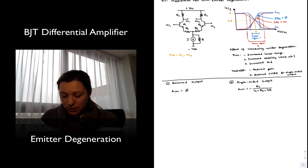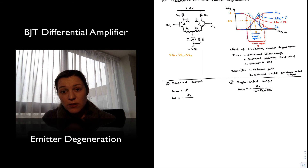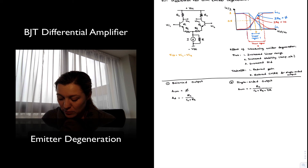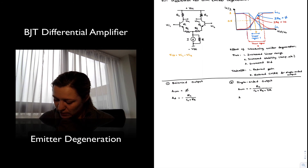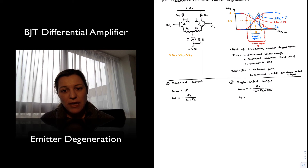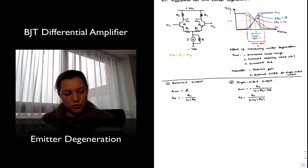The differential gain for the balanced output was equal to negative RC divided by little rE. Now with RE added, the overall emitter resistance becomes little rE plus capital RE, so the differential gain becomes negative RC divided by rE plus RE. For the single-ended output, the differential gain is half that of the balanced output and positive: RC divided by 2 times (rE plus RE).